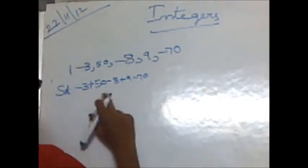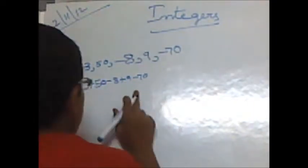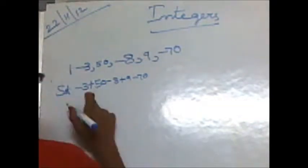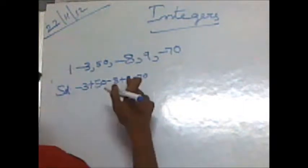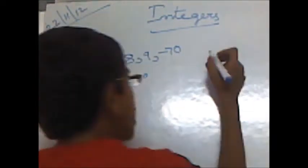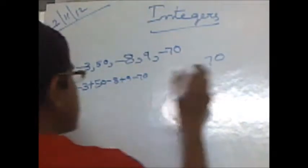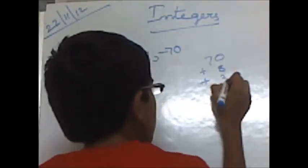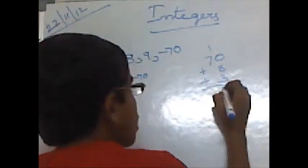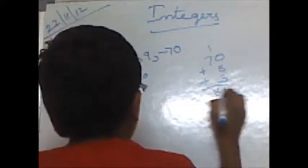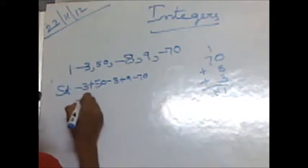First, we are going to add all the minus family — all the digits in the minus family. In the minus family, there are digits 3, 8, and 17. We add 17 plus 8 plus 3. 8 plus 3 is equal to 11, and 1 plus 7 is equal to 8. So all three minus numbers become minus 81.